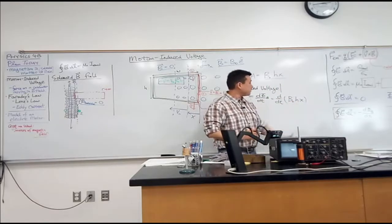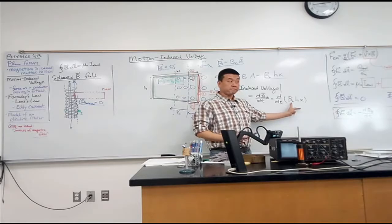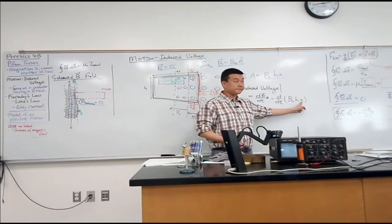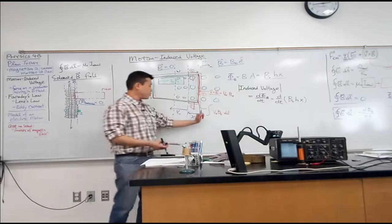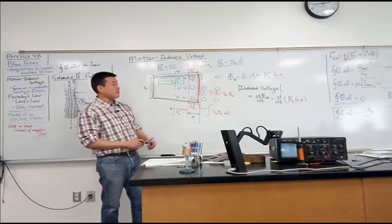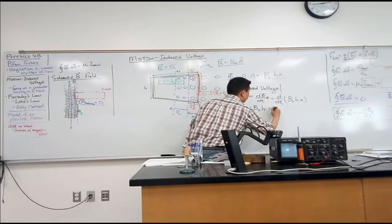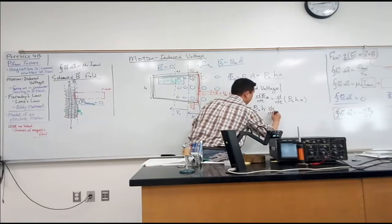So I'm going to try to take the time derivative of this entire expression here: B_naught, H, x. Any of these parameters a function of time? B_naught a function of time? No. H a function of time? No. What about x? Yeah. The region of space that's filling up is going to increase as a function of time. So let's write it out. It'll be B_naught H times rate of change of x.